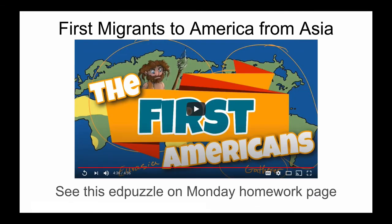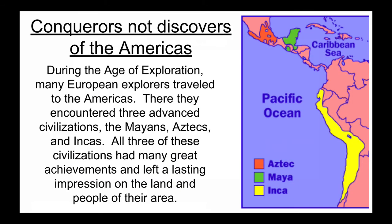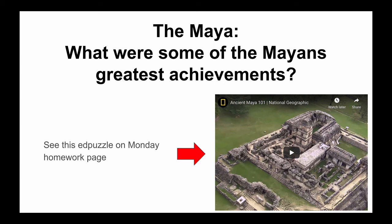The Ed Puzzles are going to be put on Google Classroom for you. Here's the first one — the First Americans. Then came the Conquerors: after the first Americans were here and during the Age of Exploration, which we just finished, many European explorers traveled to the Americas. There they encountered three advanced civilizations — Mayans, Aztecs, and Incas. All three made great achievements and left a lasting impression on the land and the people of their area, even to today. This will be the second Ed Puzzle for today, Monday.